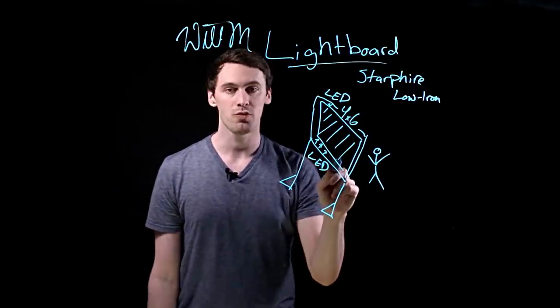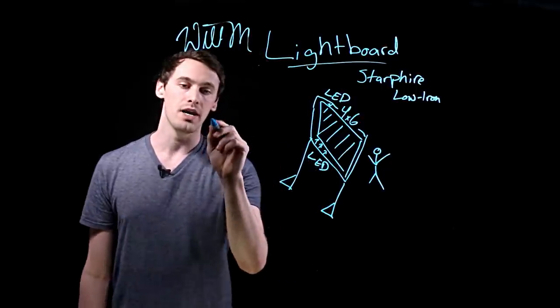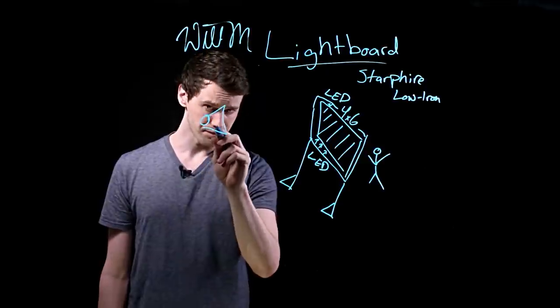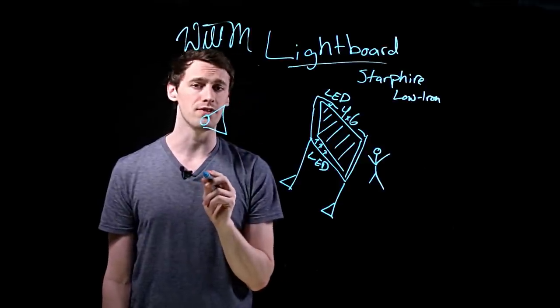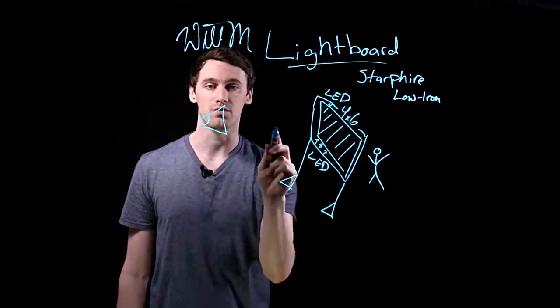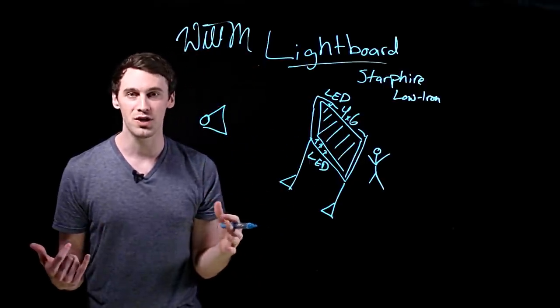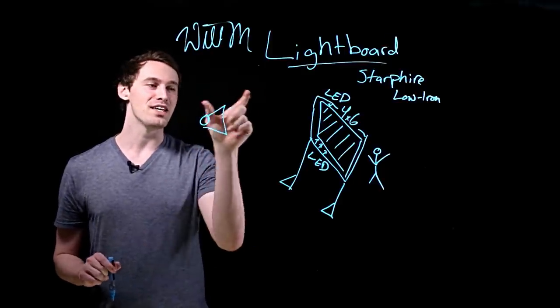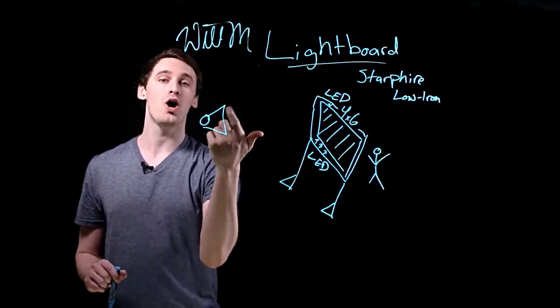So that's basically how the light board itself works. Now we have a video camera, obviously, that is shooting me. The really interesting thing about the video camera is we can't just shoot straight on, because anyone that's driven in front of an ambulance before knows that the mirror effect will actually flip all of this. So right now, everything I'm writing is actually inverted and you wouldn't be able to read it.